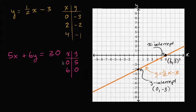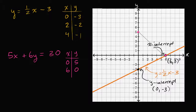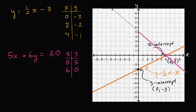So we could plot those points: zero comma five — when x is zero, y is five — and when x is six, y is zero. Those are both points on this graph. The actual line that represents the x and y pairs that satisfy this equation is going to look like this. It's going to go through those two points, and it's going to look something like that.